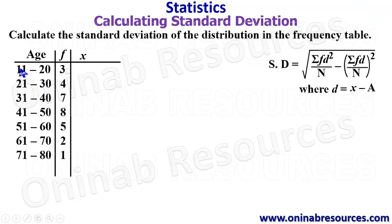For the first class interval, we add the lower limit and the upper limit and then divide the sum by 2. 11 plus 20 gives 31, 31 divided by 2 gives 15.5. 21 plus 30 divided by 2 gives 25.5. 31 plus 40 is 71 divided by 2 gives 35.5. 41 plus 50 divided by 2 gives 45.5. 51 plus 60 divided by 2 gives 55.5. 61 plus 70 divided by 2 gives 65.5. And finally, 71 plus 80 divided by 2 gives 75.5.